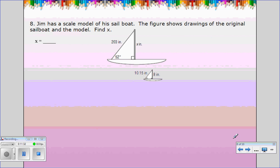All right, Jim has a scale model of a sailboat. So here's the big boat, here's the little boat. The figure shows drawings of the original sailboat and the model, find X. So I'm going to pair the 203 with the 10.15, I think I'm going to have to get the calculator out on my cell phone, and the tallness pairs with the tallness. So we're going to cross-multiply. So I get 10.15X equals, and let me see, calculator. All right, so 203 times 8, 203 times 8, so 1624. And then divide both sides by 10.15, so X is 160. So the height of this boat is 160 inches.